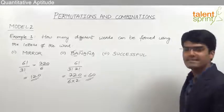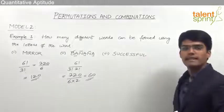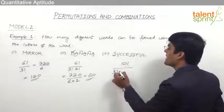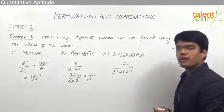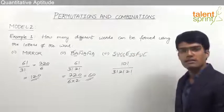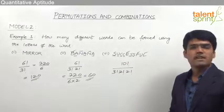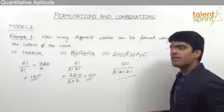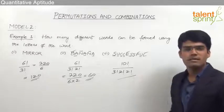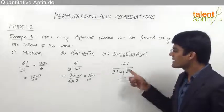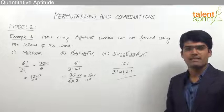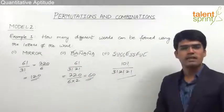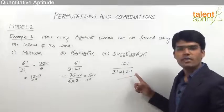Let's now look at the third word: successful. It has total 10 letters. So we start with 10 factorial in the numerator. The letter S appears thrice, giving 3 factorial in the denominator. U appears twice, giving 2 factorial. C appears twice, giving another 2 factorial. Whereas E, F, and L are unique. So the different words which can be formed using the letters of the word successful equals 10 factorial divided by 3 factorial into 2 factorial into 2 factorial. Remember: do not simplify such questions without looking at the options, because sometimes answers are given in factorial form. Go for simplification only when a simplified numerical answer is required. Otherwise, 10 factorial divided by 3 factorial into 2 factorial into 2 factorial can itself be taken as the answer.